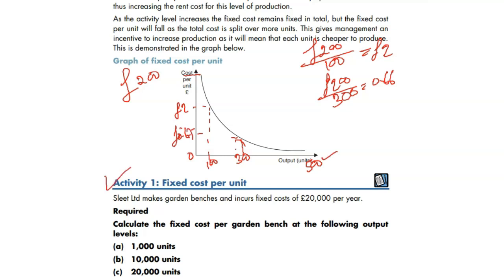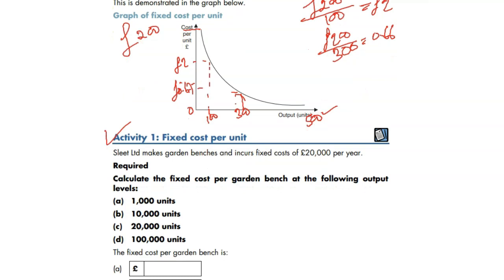We have an activity at the bottom. Let's do it. The simple logic here: fixed cost per unit goes down. So it's good to produce more because the fixed cost in total remains the same, but your productivity is going better.